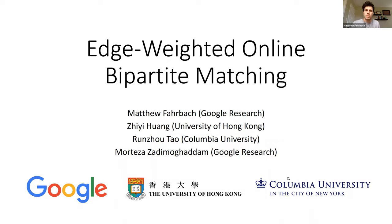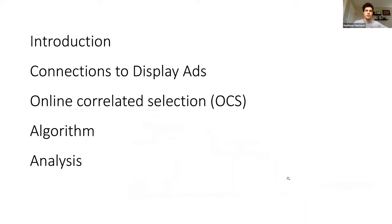Today's talk is on a paper called 'Edge-Weighted Online Bipartite Matching,' joint work with Ji Huang and Morteza Zadimoghaddam. It's gone through a sequence of refinements, ultimately a merger between Morteza's original idea and further developments. The majority of the talk will focus on the main ingredient, which we call online correlated selection, and we'll see how it all comes together at a high level.